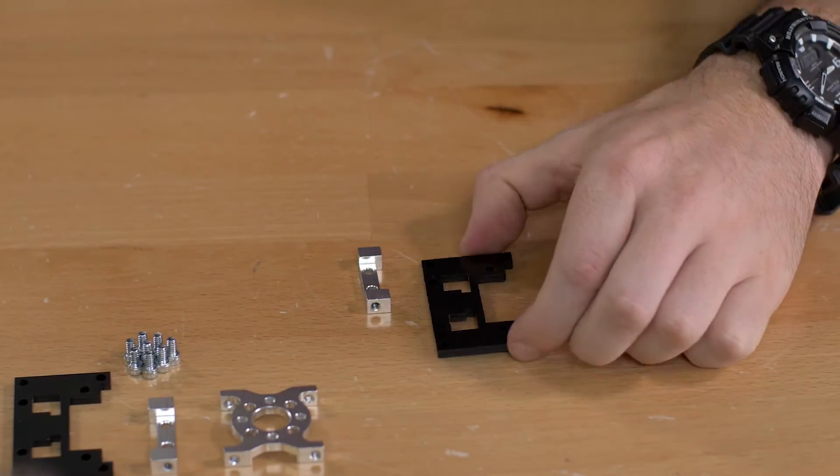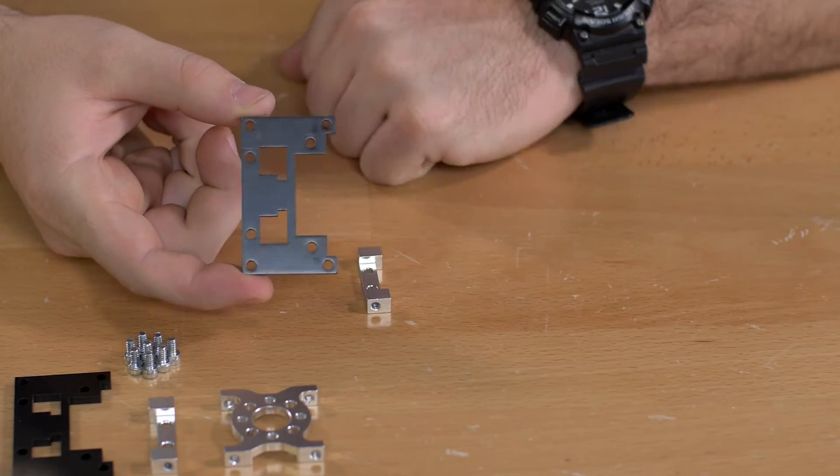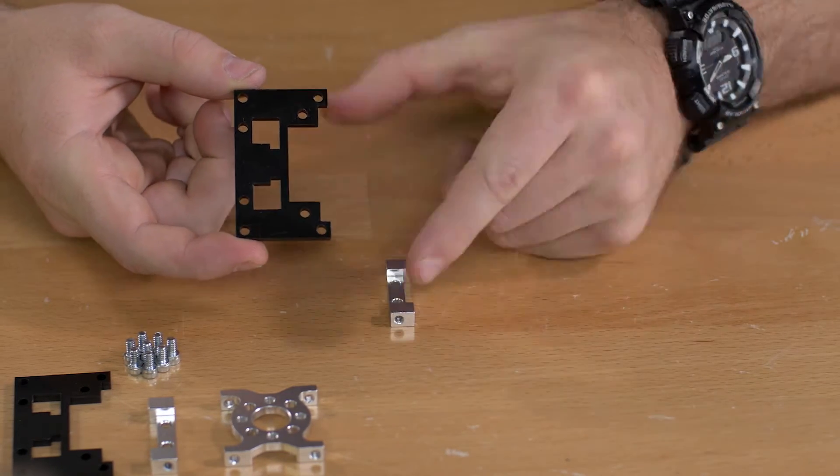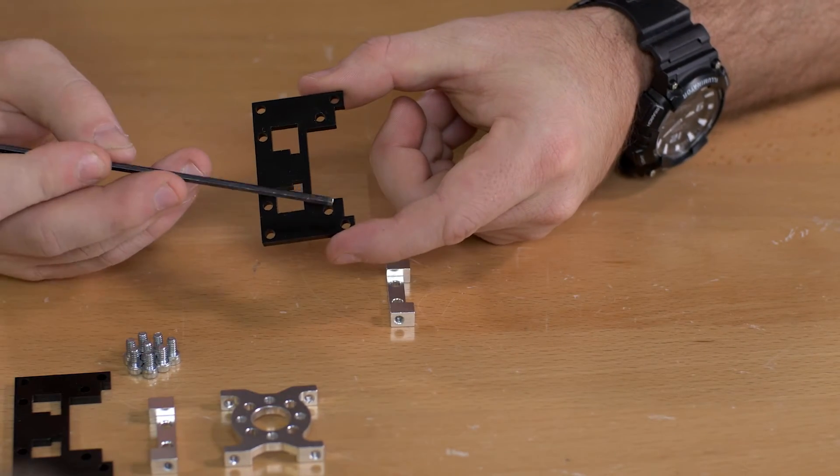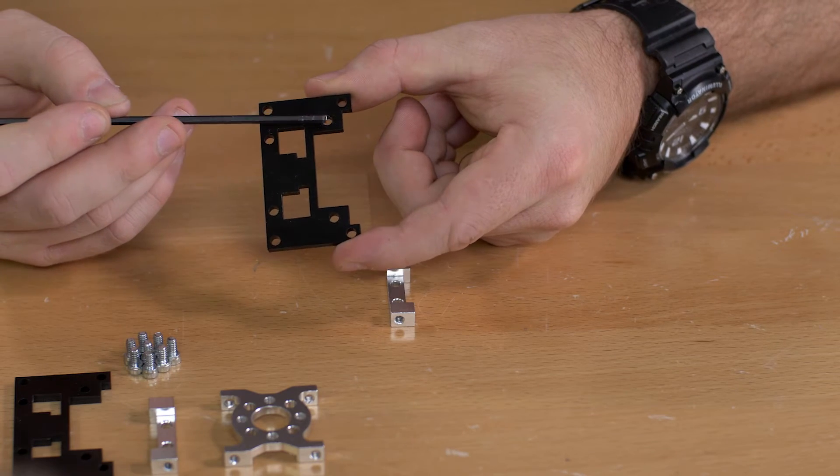The first step will be to combine the plastic piece with the dual side mount using the quarter inch socket head screws. And these dual side mounts are going to go in this hole here and this hole here.